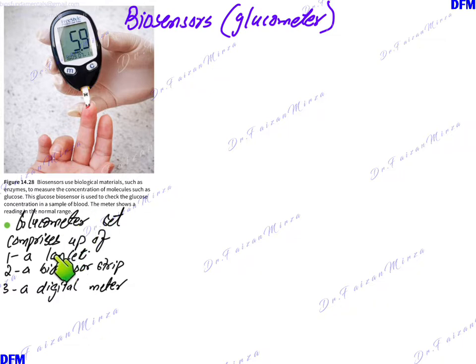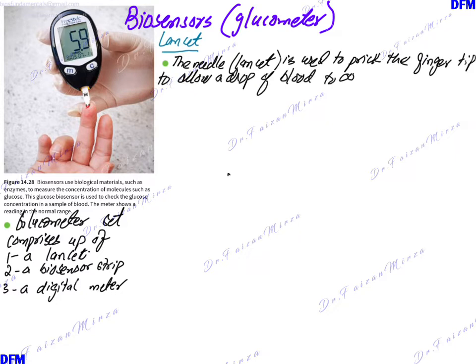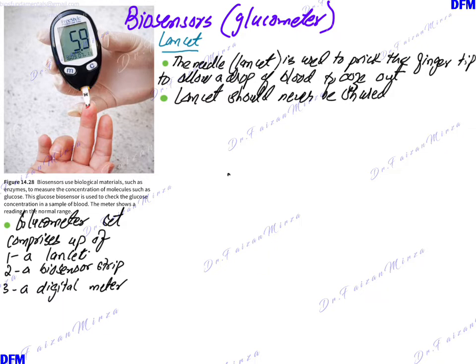A glucometer set comprises three different parts: a lancet, a biosensor strip, and a digital meter. The lancet is essentially a metallic needle used to prick the fingertip, allowing a blood drop to come out. Lancets should never be shared because, since they pierce through the body, they can be a source of transmitting infections from one person to another.